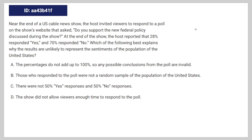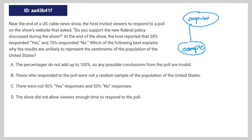In order for sample data to represent the sentiments of the entire population as a whole, the sample data has to be taken at random from the original population. In this situation, the sample is going to be the viewers that responded to the poll, and this is going to be taken at random from the people that watched the US cable news show. So you could say that the sentiments of the people who responded to the poll represent the sentiments of all the people that watched the US cable news show.